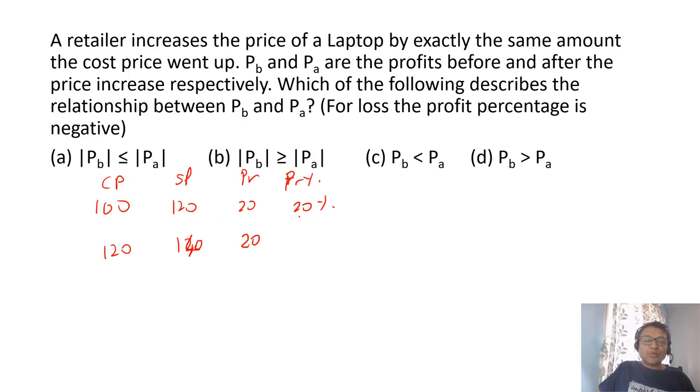So profit will remain 20. So 20 out of 120 is 1 upon 6 and you should know 1 upon 6 is 16.66%. So we know that profit after is less than profit before. Since profit after is less than profit before, we can definitely make out that C option is not possible and even A option is not possible.